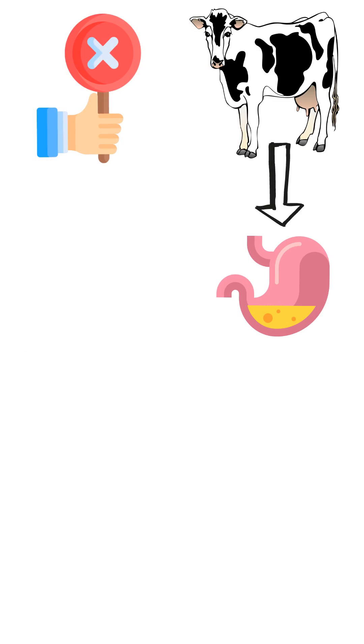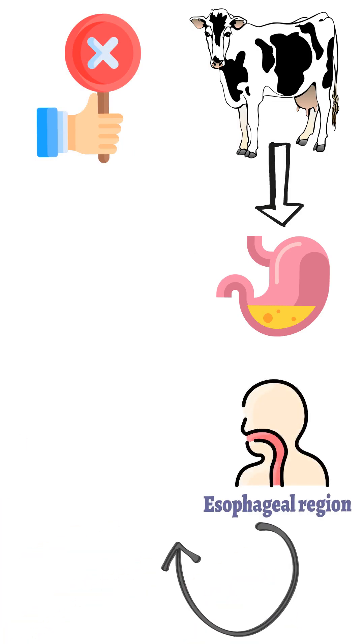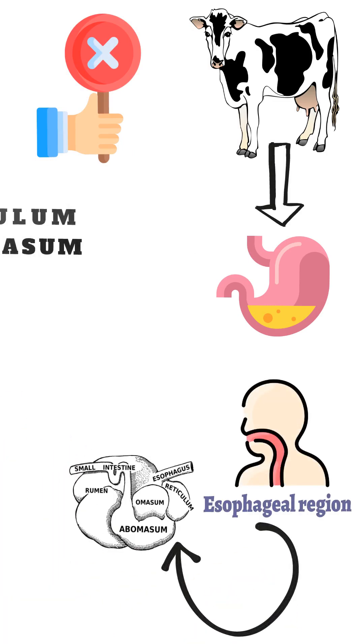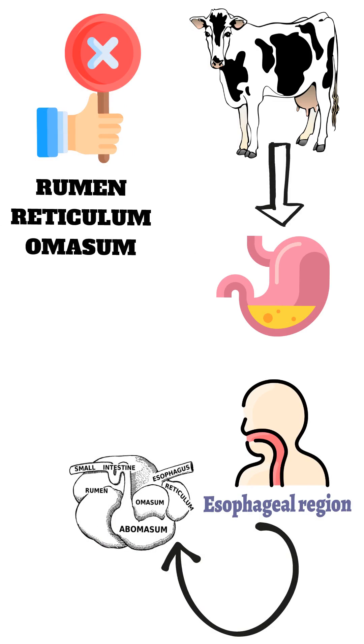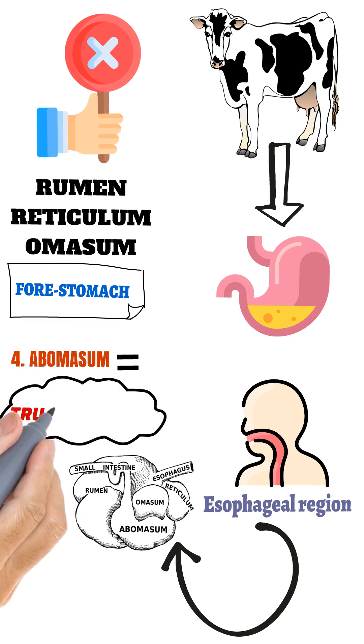Cow stomach is a single stomach modified by marked expansion of esophageal region into three compartments: rumen, reticulum, omasum, collectively known as forestomach, and fourth compartment aka abomasum also called the true stomach.